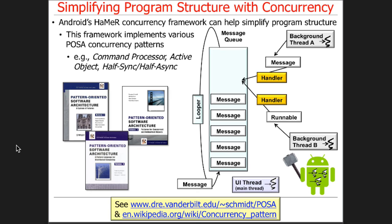To really make this work well, it helps to know certain patterns. Key patterns here include the command processor pattern — used when posting runnables to handlers in the HAMMER framework; the active object pattern — used when sending messages to handlers; and the half-sync/half-async pattern — implemented by the HAMMER framework and another framework called AsyncTask. We'll come back to all of these. When you understand the patterns and the source code, you can figure out how to write better code.